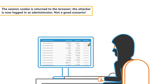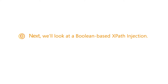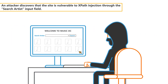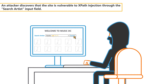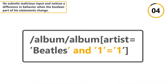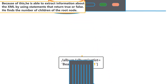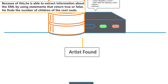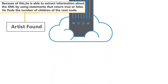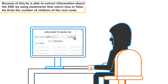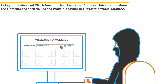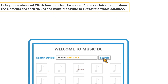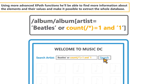Next, we'll look at a Boolean-based XPath injection. In this example, we have a website with an XML database of music. An attacker discovers that the site is vulnerable to XPath injection through the search artist input field. He submits malicious input and notices a difference in behaviour when the Boolean part of his statements change. Because of this, he is able to extract information about the XML by using statements that return true or false. He finds the number of children of the root node. Using more advanced XPath functions, he'll be able to find more information about the elements and their values and make it possible to extract the whole database.